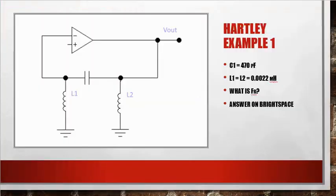Hartley example number one, what we have is our capacitor C1 is 470 picofarad. Our two inductors are 0.0022 millihenrys or 2.2 nanohenry. Oh, what the heck would that be? 0.22, 2200 microhenrys. What was the frequency of resonance? The answer is on Brightspace.